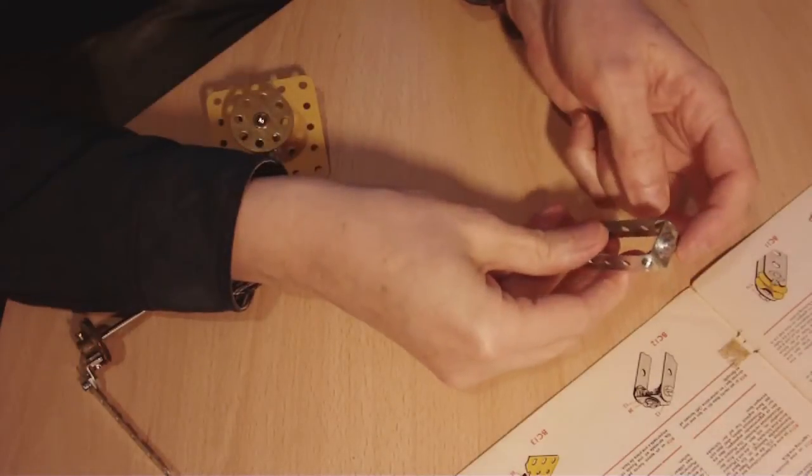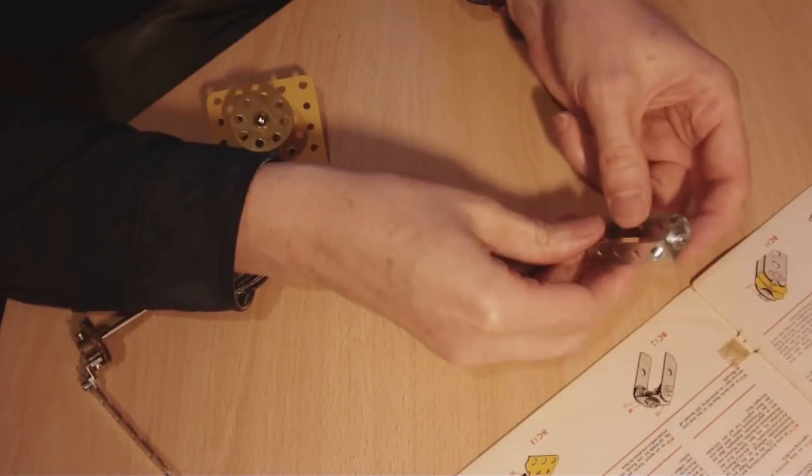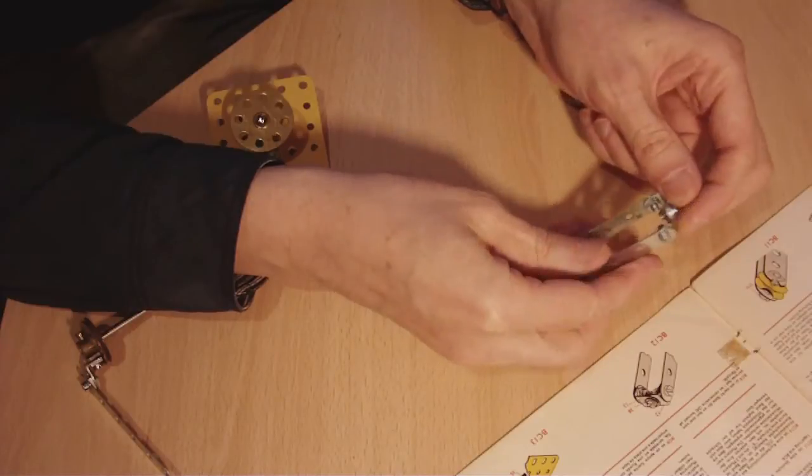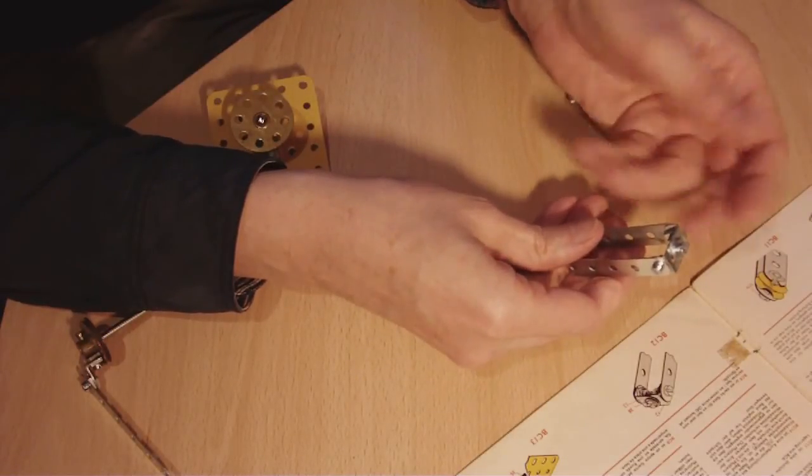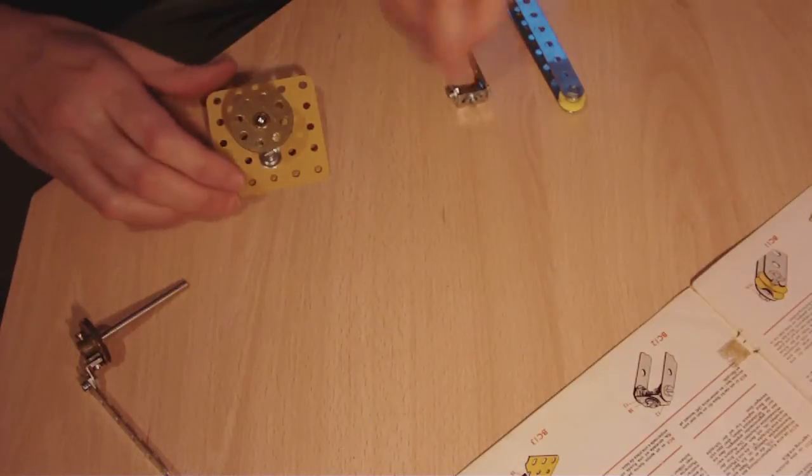BC-12 is two angle brackets to form a U shape. Normally you'd use a double angle bracket for that, but anyway that's BC-12.